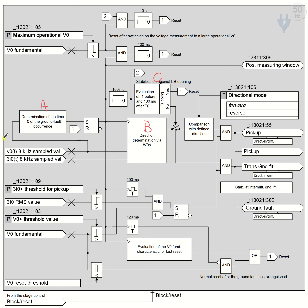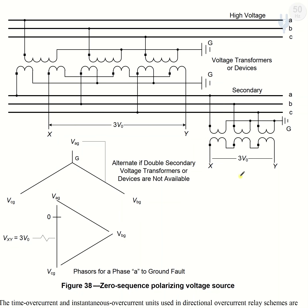We know that the instantaneous value of zero sequence voltage (V0) can be obtained from the system via calculation from VA, VB, VC, or it can be measured from the open delta winding of the PTs. According to the IEEE standard guide, this open delta winding connection is the voltage measuring method, and from this open delta winding of the PTs we get V0, the zero sequence voltage.